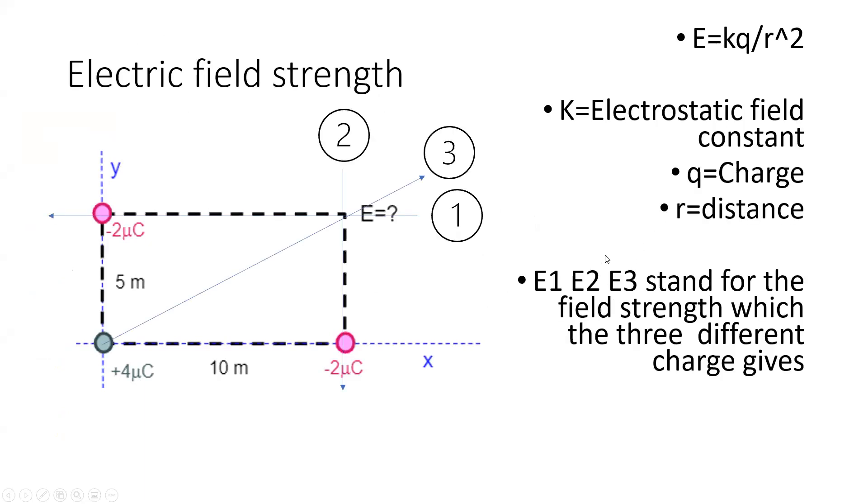The first thing we need to do is find the electrical field contributed by one charge. The E field formula of a single charge is given by E equals KQ over R squared. K is the Coulomb constant, Q is the charge, and R is the distance.